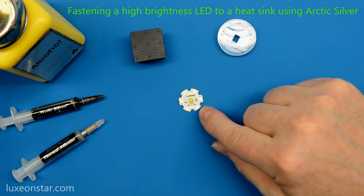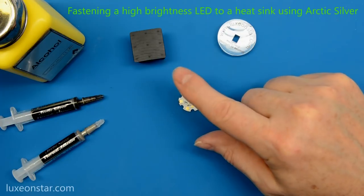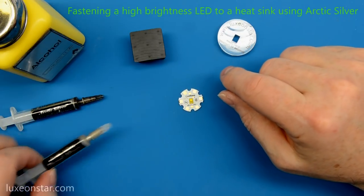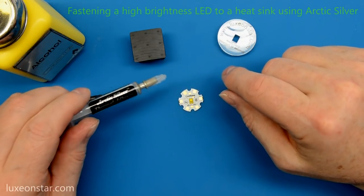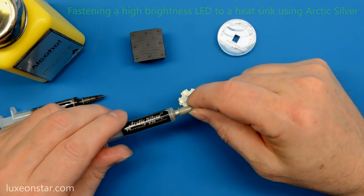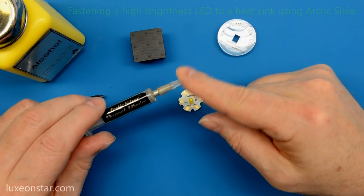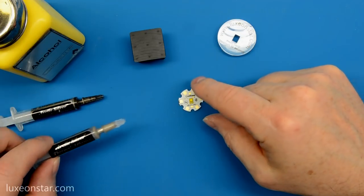One option for fastening an LED assembly to a heat sink is to use Arctic Silver two-part epoxy adhesive. When applied correctly, Arctic Silver adhesive will create a very efficient permanent bond between the assembly and the heat sink.